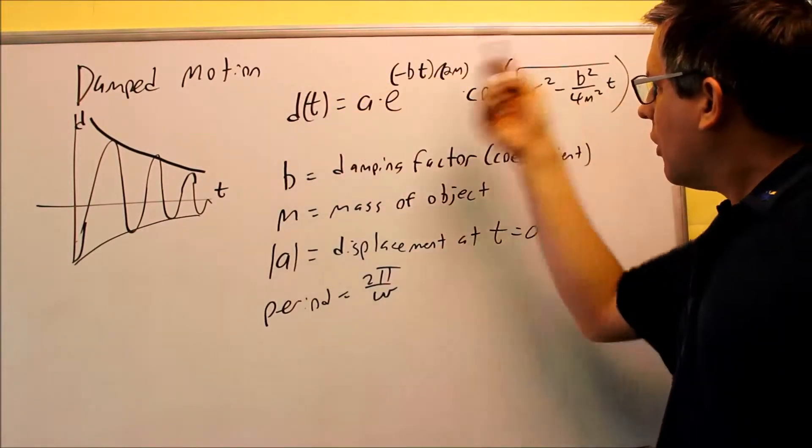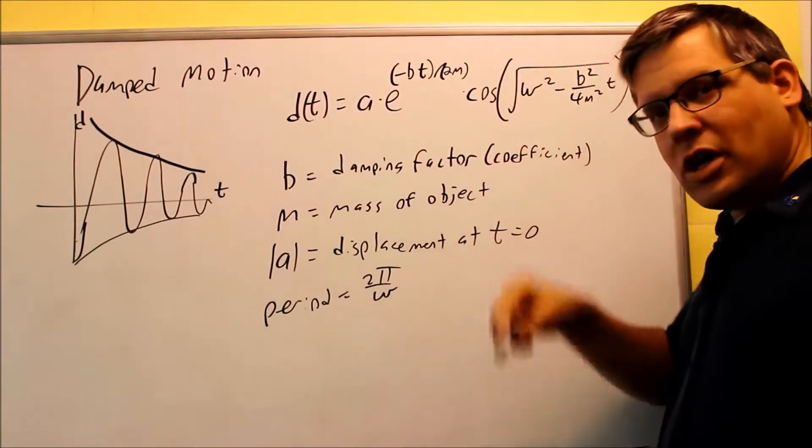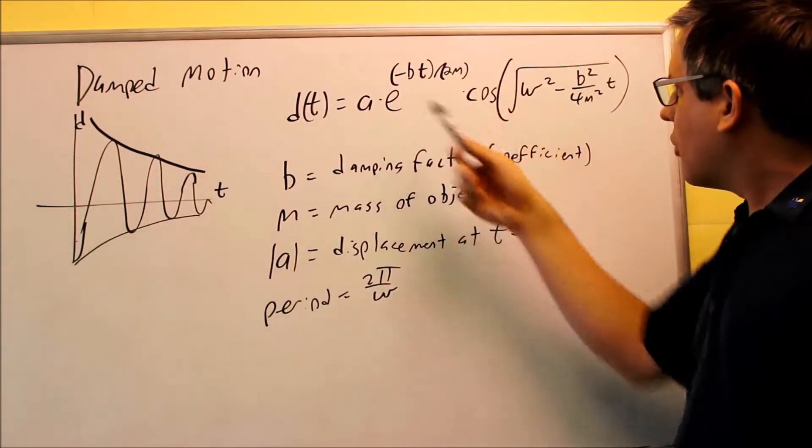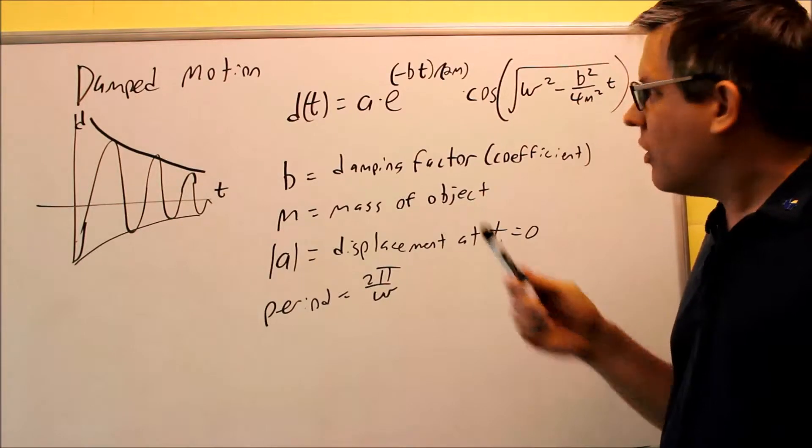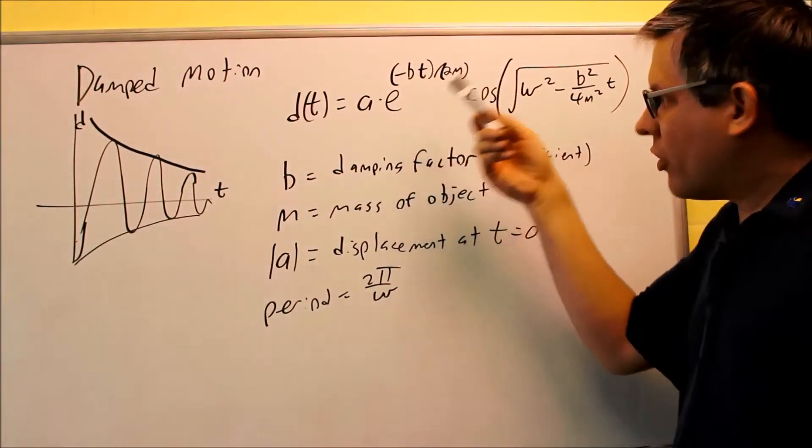So here's the formula for damped motion. We still have a cosine in there, so it's still going to be oscillating back and forth, but we have these other things at play. So one thing you might notice is, why does the formula have an E in there? That's an exponent.